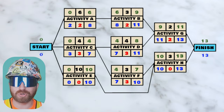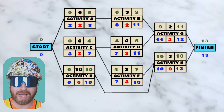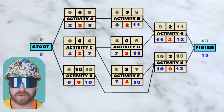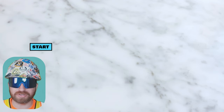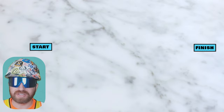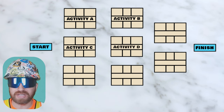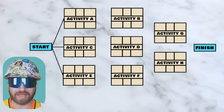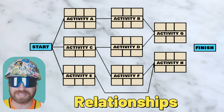Now we've made it to our CPM schedule example. This example is a manual calculation of what construction scheduling software will do for us, but we need to first understand how this works on paper so we can understand what's happening behind the scenes. Once you understand how to manually calculate a CPM schedule, you'll likely never need to manually write one out again because your software works ten times faster. This example has a starting milestone, a finish milestone, and eight activities in between labeled A through H. I'm connecting these activities together with lines, which is how we sequence this project, and each line represents a finish-to-start relationship.